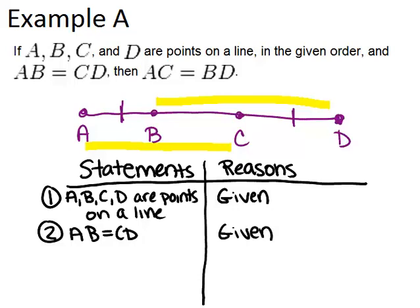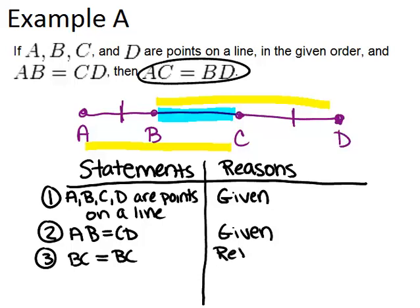Now here's where you're going to have to do some thinking. How can we go from AB equals CD to AC equals BD? One thing I noticed from my picture is that segment BC seems to be important because it shows up in both AC and BD. It's the missing piece beyond AB and CD in each case. So the next thing I'm going to do is use the reflexive property and say that BC equals BC, because anything is equal to itself.